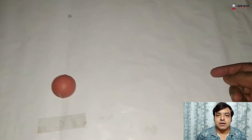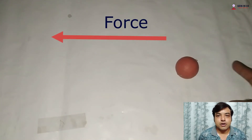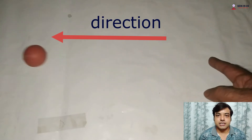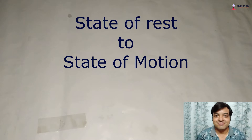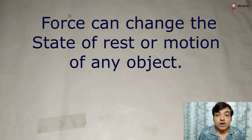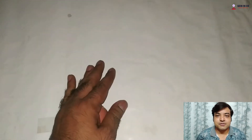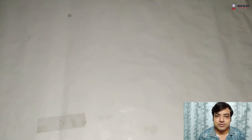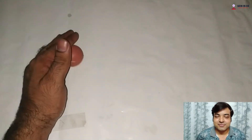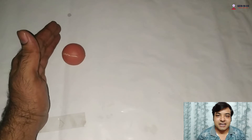Next, suppose this object is at rest. Now I am applying force in this direction and this object starts to move in this direction — the object changes its state of rest to state of motion. Similarly, if this object is in motion and I apply force in the opposite direction to the motion, then this object will come to rest. So force can change the state of rest or motion of any object. These are also effects of force.